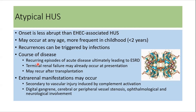Some patients can develop recurring episodes of acute disease, ultimately leading to ESRD, whereas some patients can present with terminal renal failure at the first presentation, and the disease can recur after transplantation. Some patients can also present with extrarenal manifestations like digital gangrene, cerebral or peripheral vascular stenosis, and ophthalmological or neurological involvement secondary to vascular injury induced by complement activation.